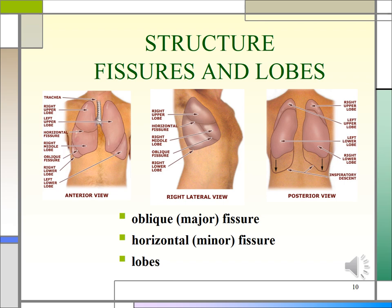Each lung is divided roughly in half by an oblique or major fissure. The right lung is further divided by the horizontal or minor fissure. These fissures divide the lungs into lobes. The right lobe is divided into upper, middle, and lower lobes, while the left lung is divided into upper and lower lobes. The apex of the lungs lies two to four centimeters above the inner one-third of the clavicle. The anterior lower border lies at the sixth rib at the mid-clavicular line, and the posterior lower border lies at the spinous process of T10. With inspiration, the lungs move down another four to six centimeters, to approximately T12.